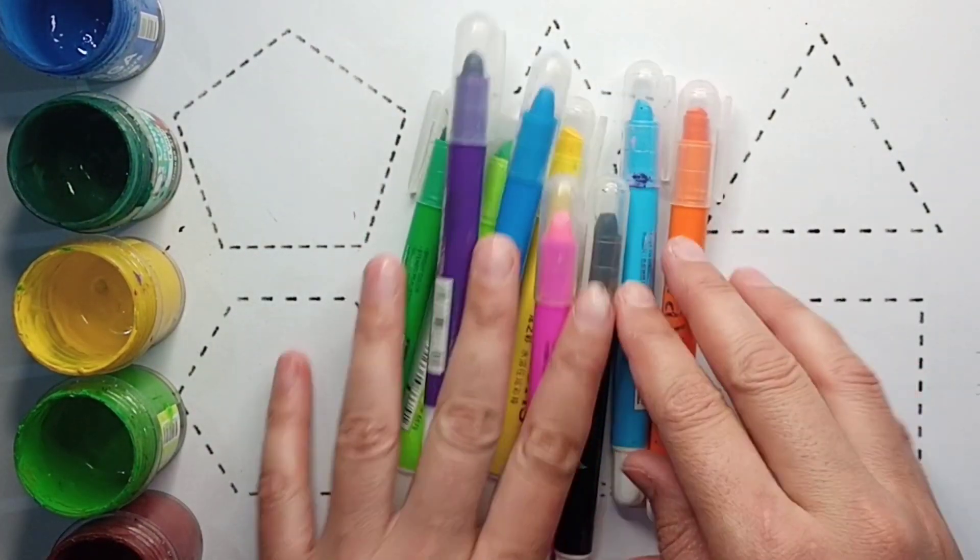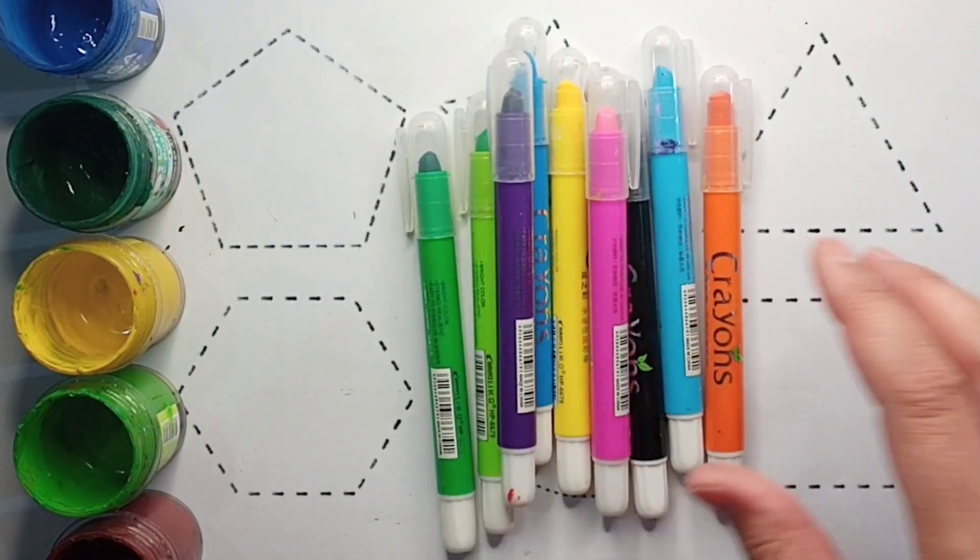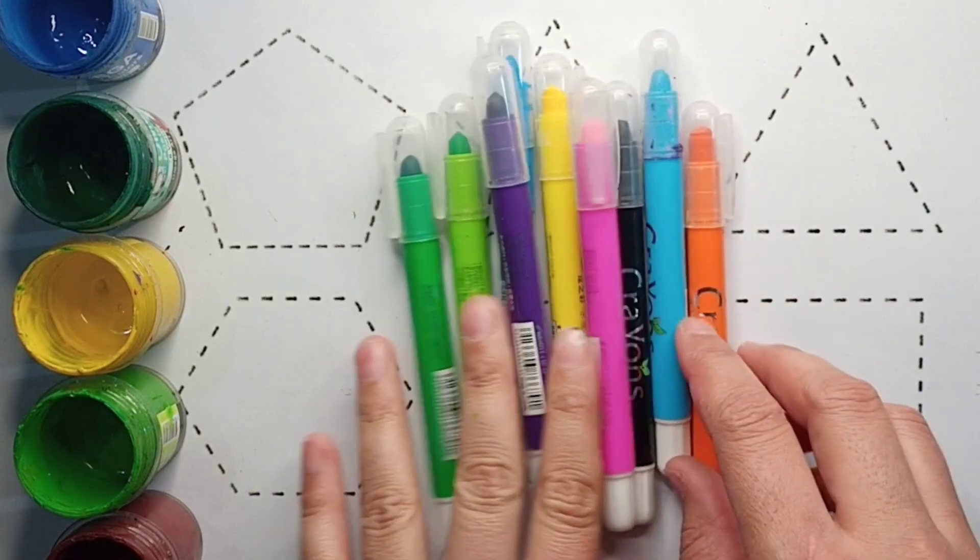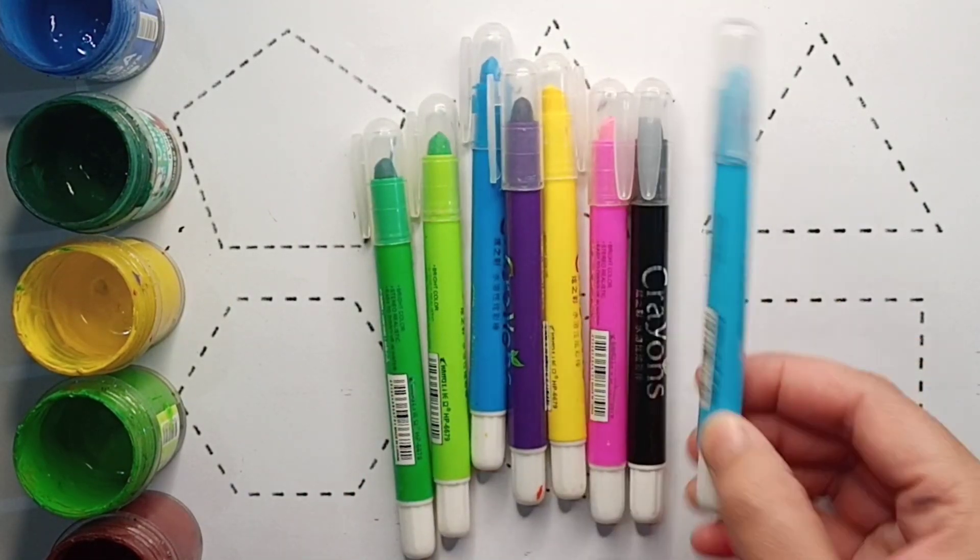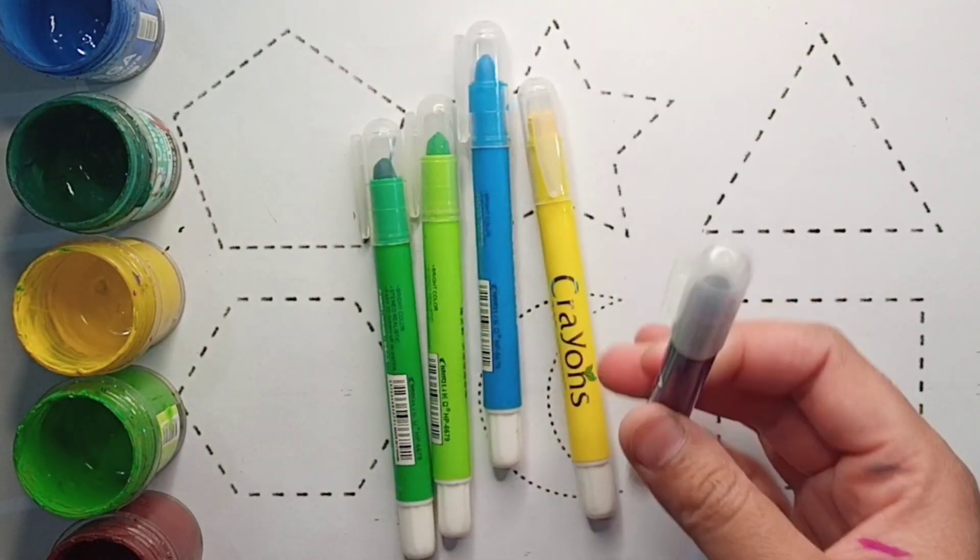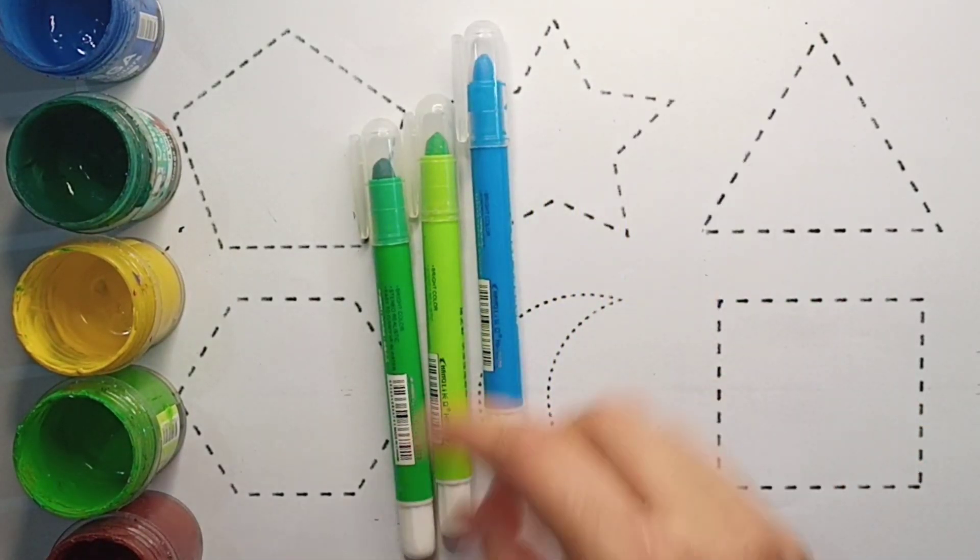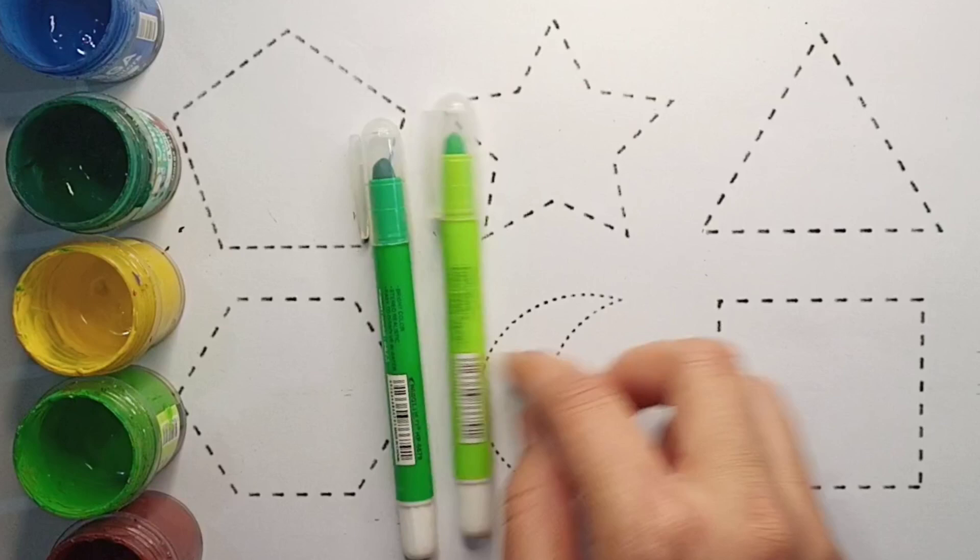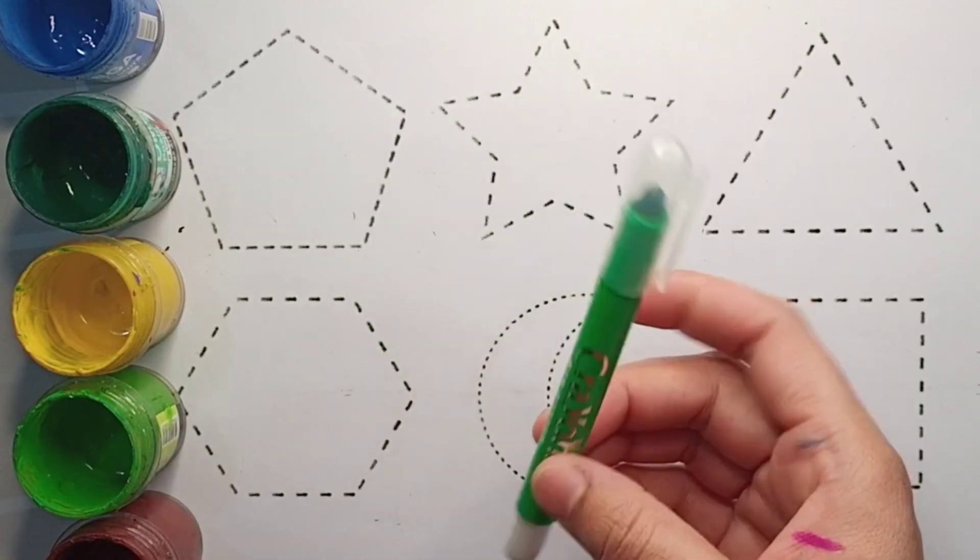Hello beautiful kids, welcome to Kitty Corner. Today we are going to study shapes. These are our colors: orange color, sky blue color, black color, baby pink color, violet color, yellow color, blue color, light green color, and dark green color.